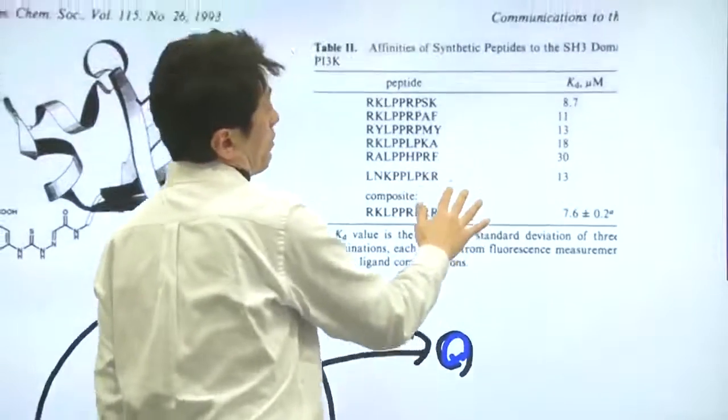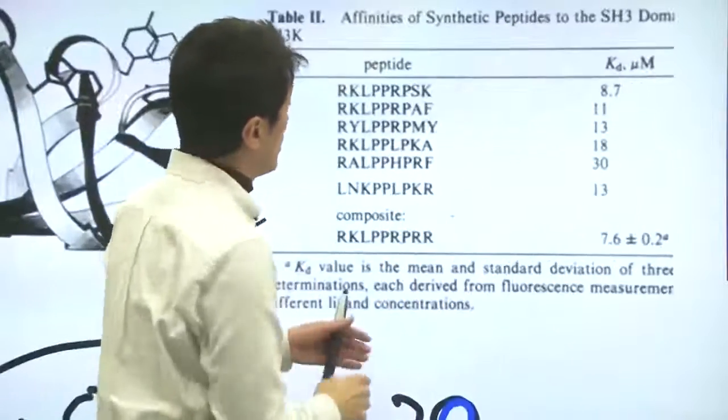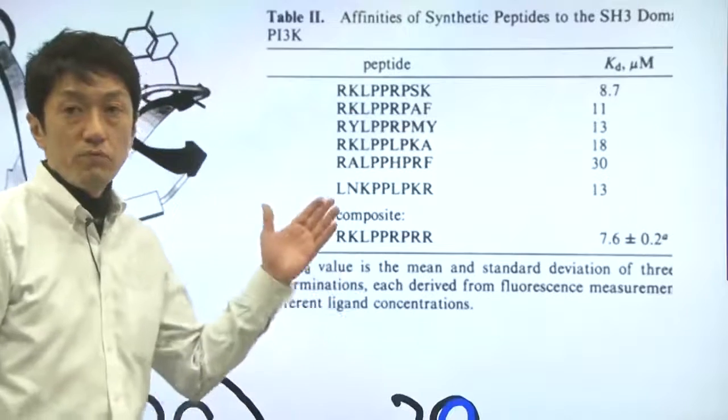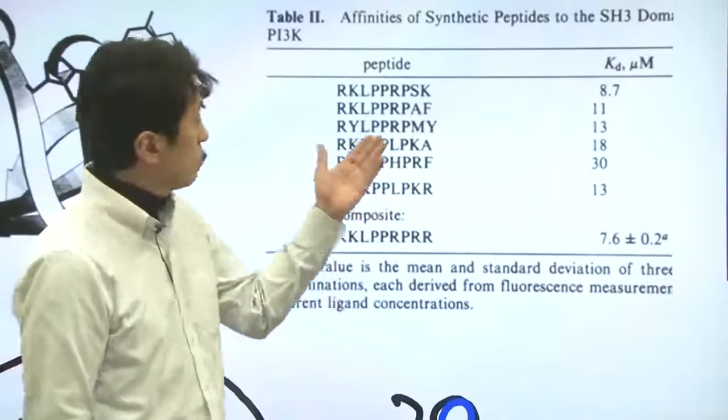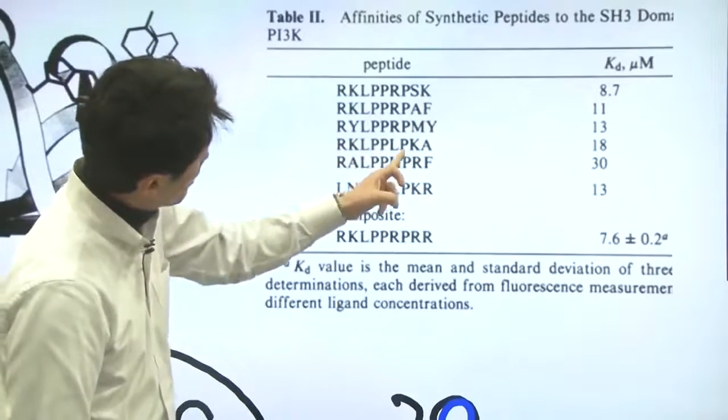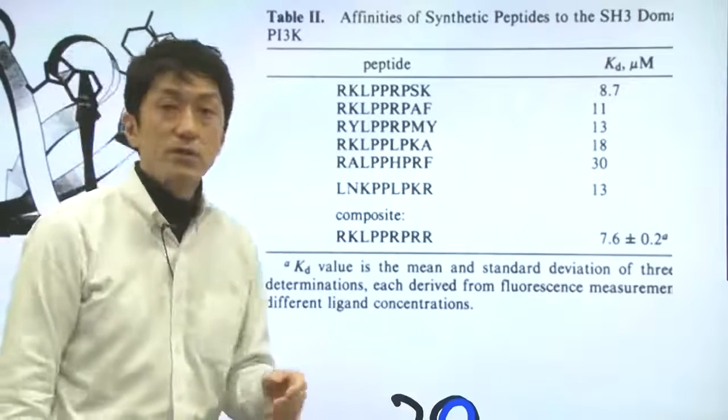The SH3 domain binding peptide turned out to be proline-rich. You can see a lot of P's here. P represents proline, if you remember.